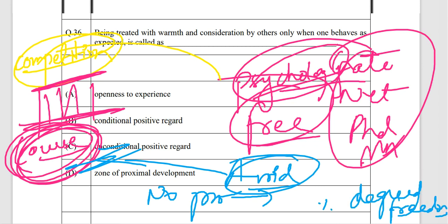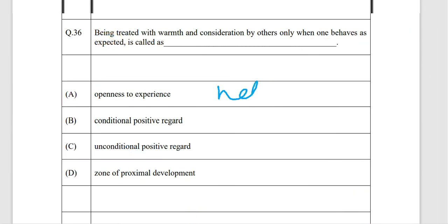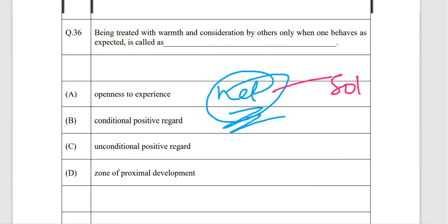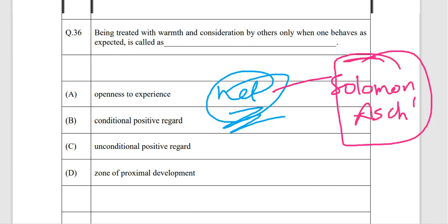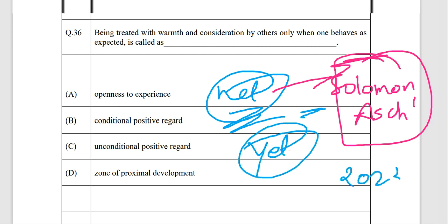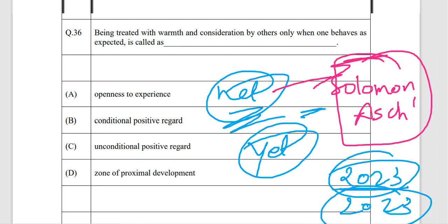Bonus tip for NET examination candidates: read about Solomon Asch, because his experiment has not been asked yet and there is a high chance it may appear in the February or June 2023 NET examination. Thank you and have a nice day — see you in the next video.